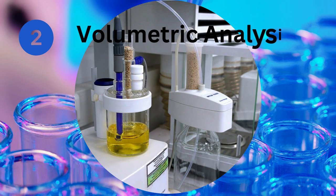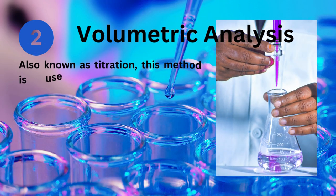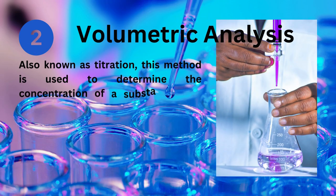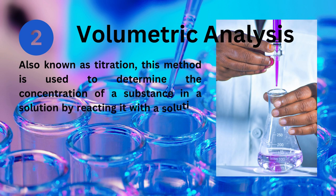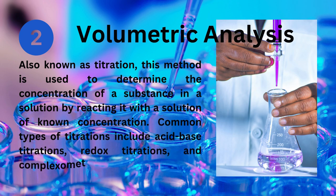Volumetric analysis: Also known as titration, this method is used to determine the concentration of a substance in a solution by reacting it with a solution of known concentration. Common types of titrations include acid-base titrations, redox titrations, and compleximetric titrations.